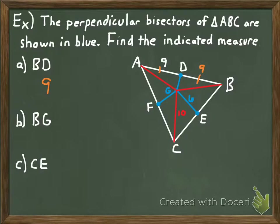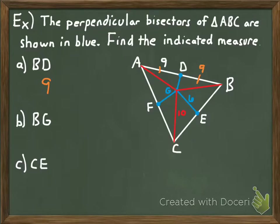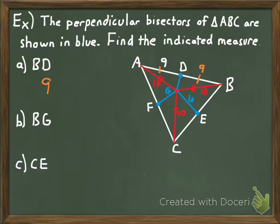The second measurement is the distance from B to G — from one of the vertices of the triangle to the circumcenter. What did we say about the distance from the circumcenter to the three vertices of a triangle? We said the circumcenter is equidistant from those three vertices. So each of those three distances are equal to one another. Since the distance from the circumcenter to C is 10, the distance from the circumcenter to either of the other two vertices would also have to be 10.